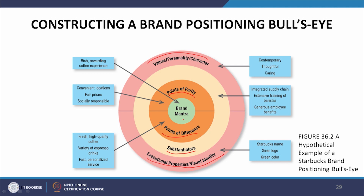For Starbucks, points of parity include convenient location, fair prices and social responsibility. Points of difference include fresh high-quality coffee, variety of espresso drinks and fast personalized service. Executional properties and visual identity include the Starbucks name, siren logo and green color. Substantiators include an integrated supply chain, effective training of baristas and generous employee benefits. Values, personality and characteristics are contemporary, thoughtful and caring.